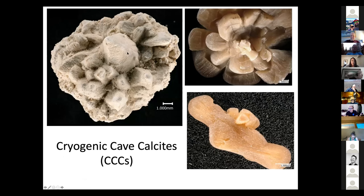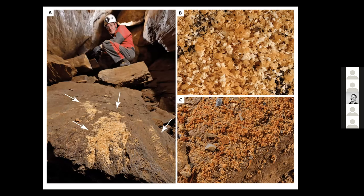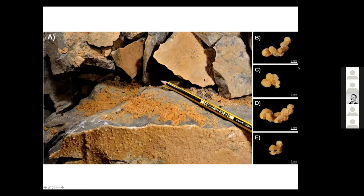There is one exception: cryogenic cave calcites. CCCs are very small formations that precipitate via cryogenic processes. Scientists only really discovered that CCCs could be used as a proxy for past permafrost in the early 2010s, so this is super recent. They're often scattered on boulders or on the ground in dried-up cave pools — not cemented to anything — making them easy to pick up and sample.